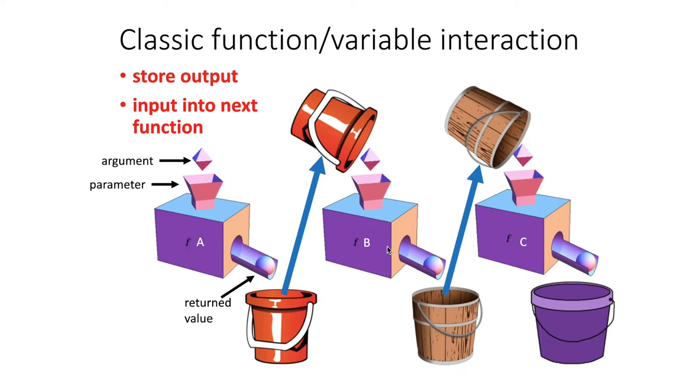Then the output of the second function lands in another bucket or data structure. I take the value in that data structure, put it as an argument into the third function. It comes out, gets stored in another data structure, and so on. So I am basically using these temporary intermediate data structures as a place to hold the data between when it comes out of the first function and when it goes into the second one.